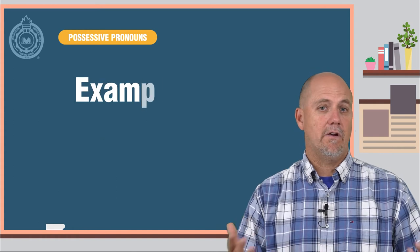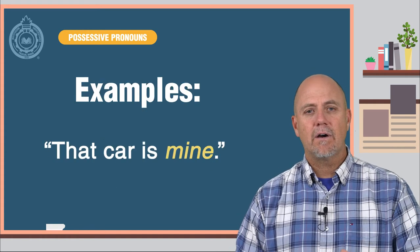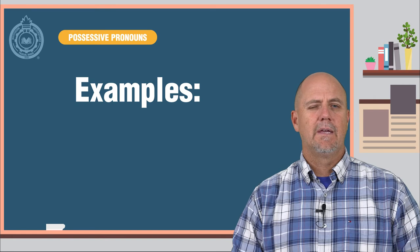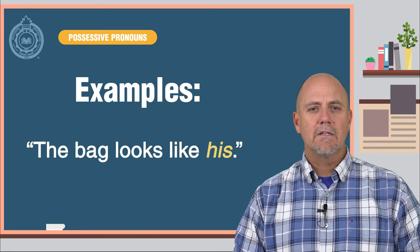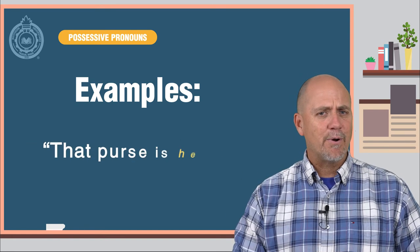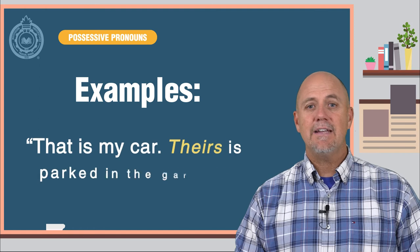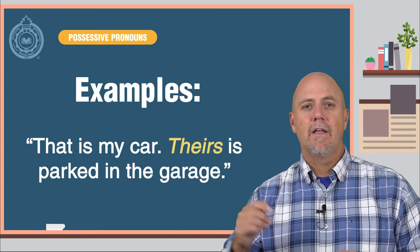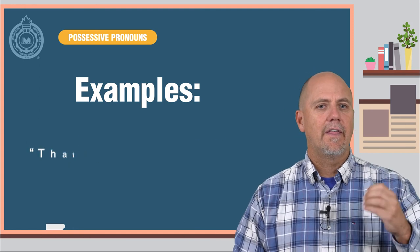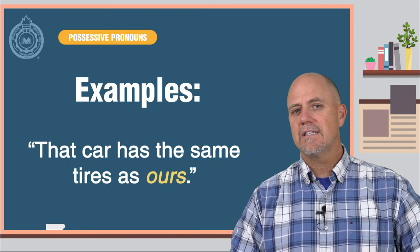Here are some examples. That car is mine. The bag looks like his. That purse is hers. That is my car. Theirs is parked in the garage. That car has the same tires as ours.